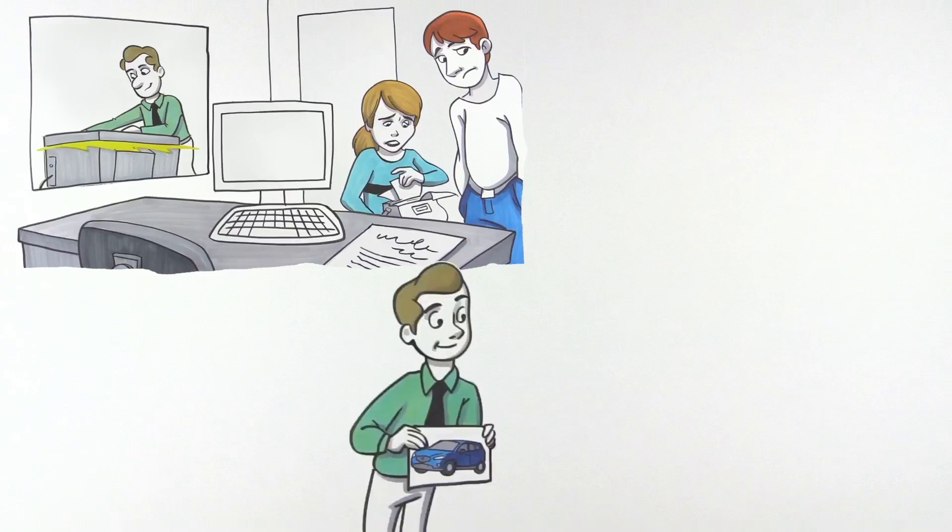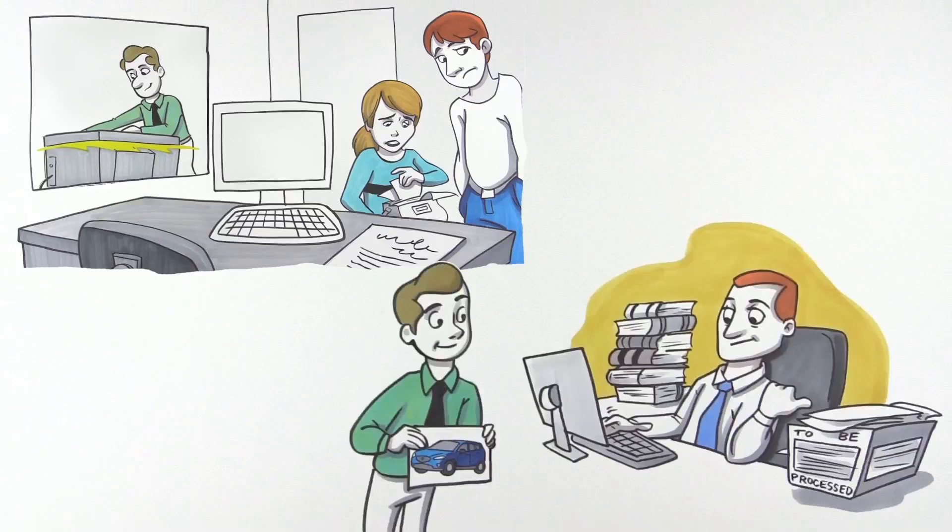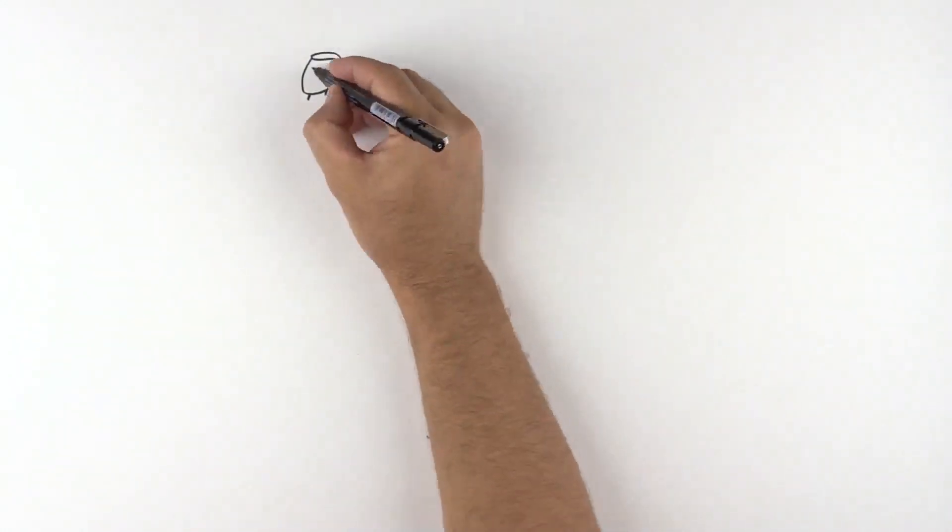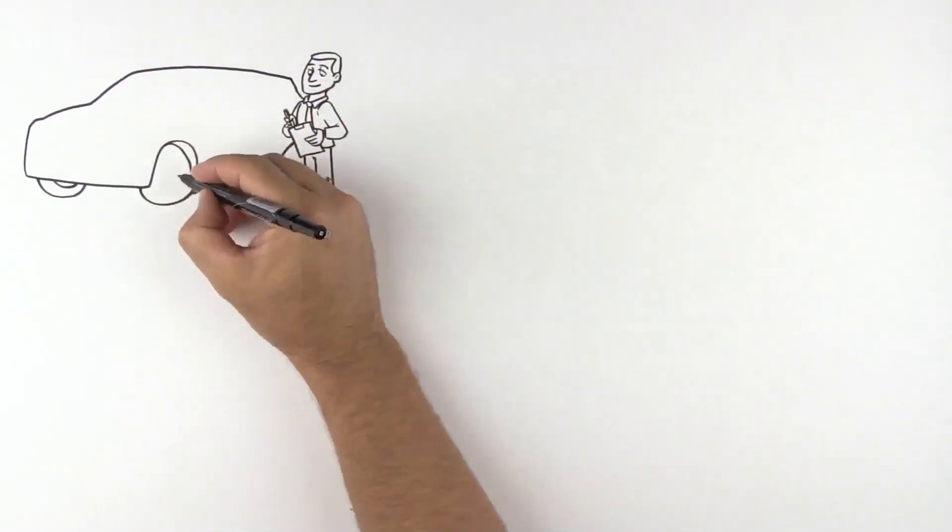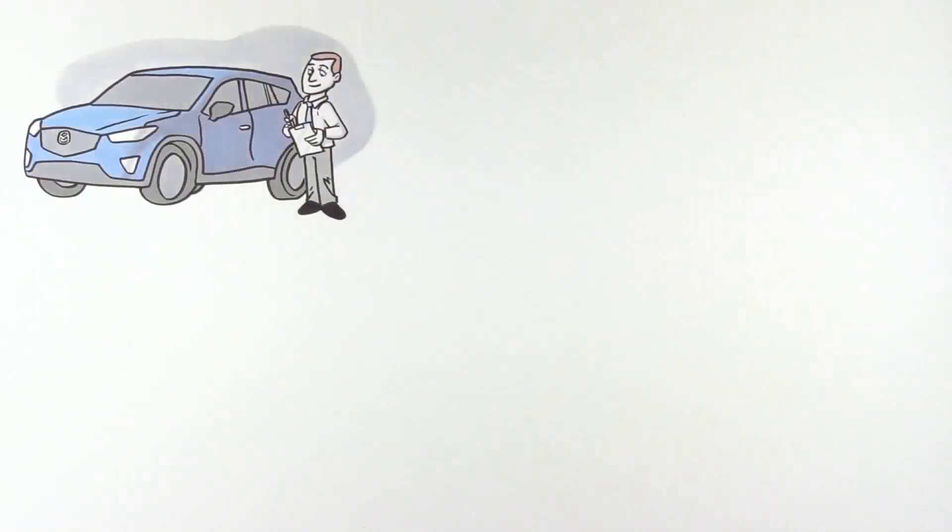Next, your pre-owned manager checks out the trade-in. Normally, there's a line of other trade-ins that have to be evaluated before they can start on the new one. Eventually, your pre-owned manager inspects the vehicle, and then they must log into a number of different systems to determine the trade-in value.